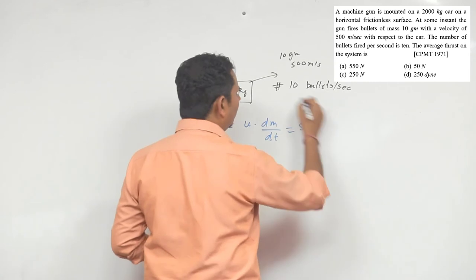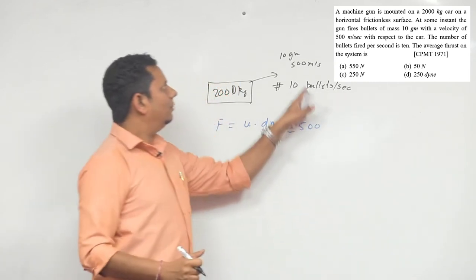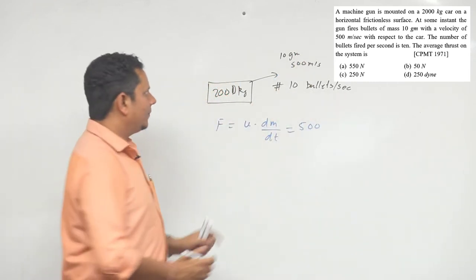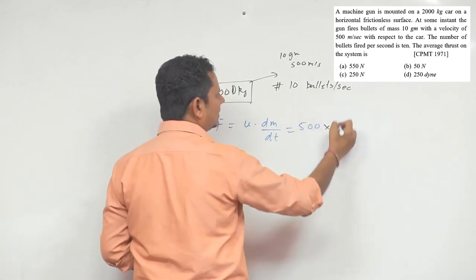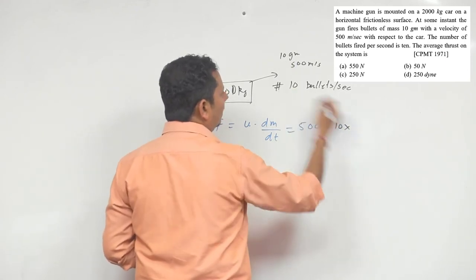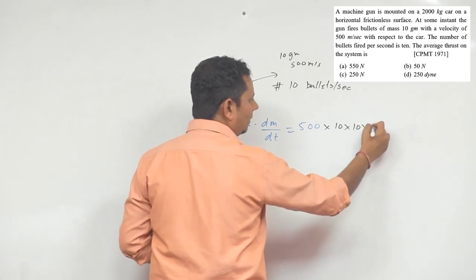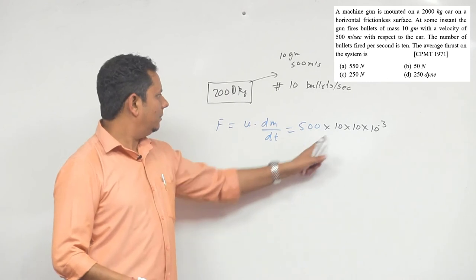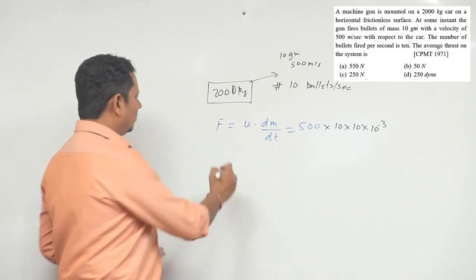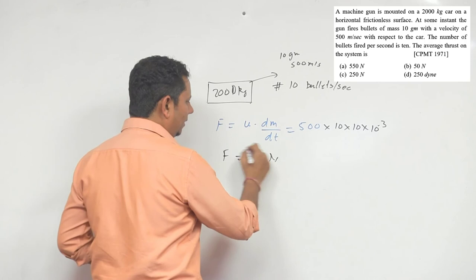So number of bullets per second, multiplied by one bullet mass - number of bullets per second, we have 10 multiplied by 10 gram, converted to 10 to the power minus 3, so this will be our thrust force. We can calculate this, F will be equal to 50 newton.